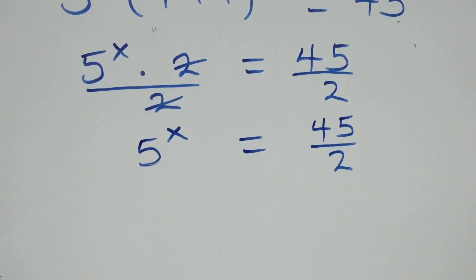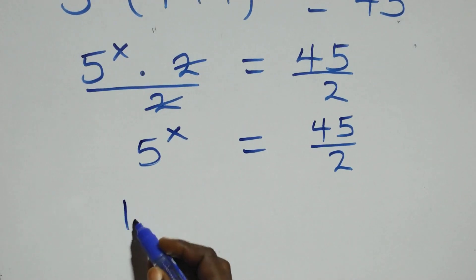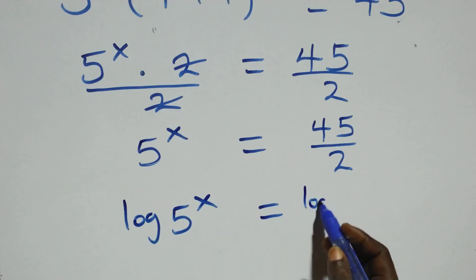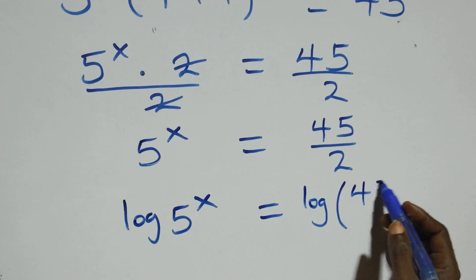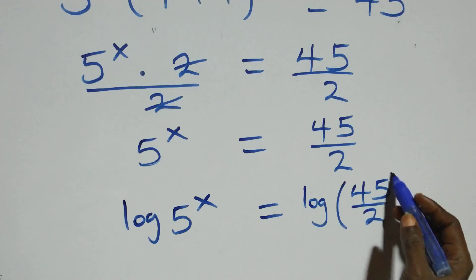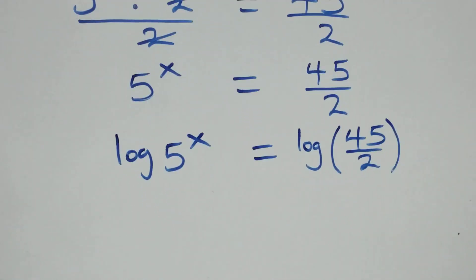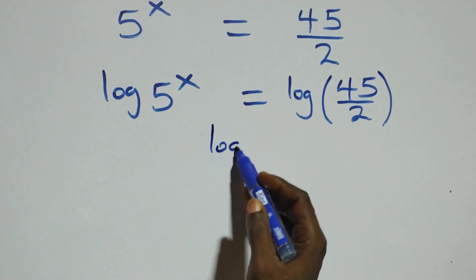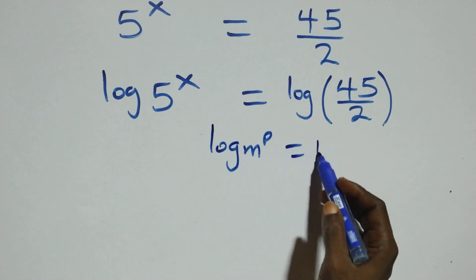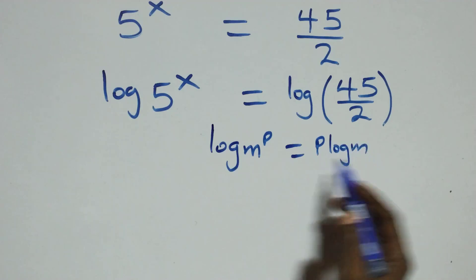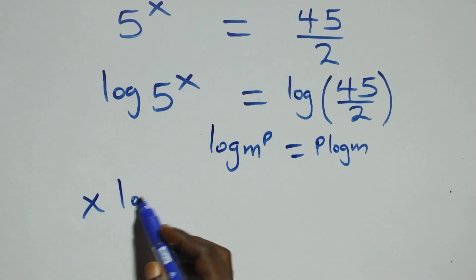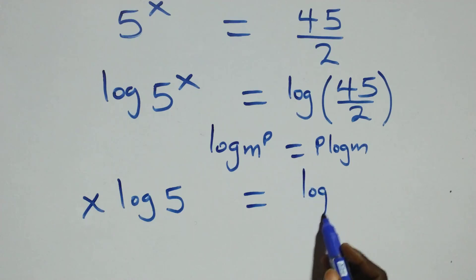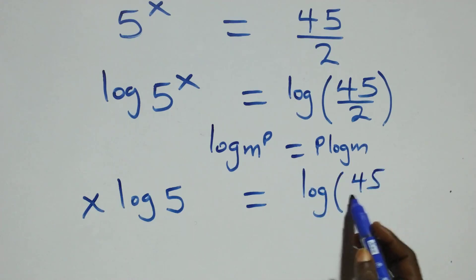Then next step, we take the log on both sides. We have log of 5 raised to power x equals log of 45 over 2. We apply the power rule of logarithms: log m raised to power p equals p log m. So what we have becomes x log 5 equals log 45 over 2.